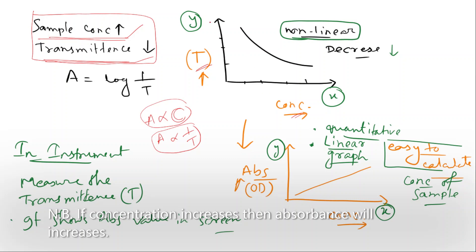We plot the y-axis as transmittance and the x-axis as concentration. The resulting graph is non-linear — it is a decreasing curve. As concentration increases, transmittance decreases in a non-linear fashion.